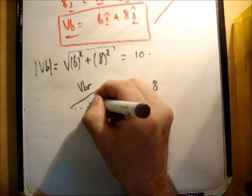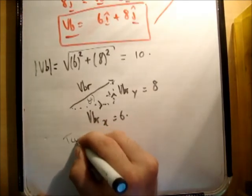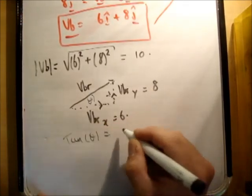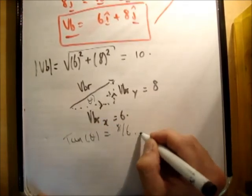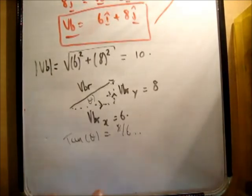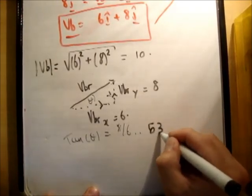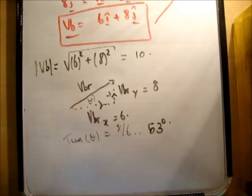Therefore, in order to get theta, you can say, tan theta is equal to 8 over 6. And if you inverse tan that, you're going to get an angle of 53 degrees.